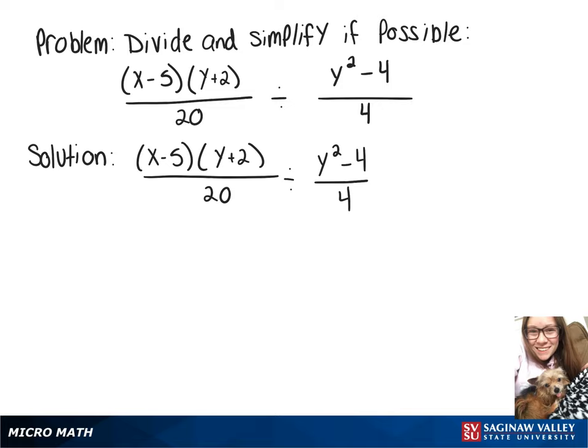We're going to divide and simplify, so to begin we need to multiply by the reciprocal. We'll have x minus 5 times y plus 2 over 20 times 4 over y squared minus 4.